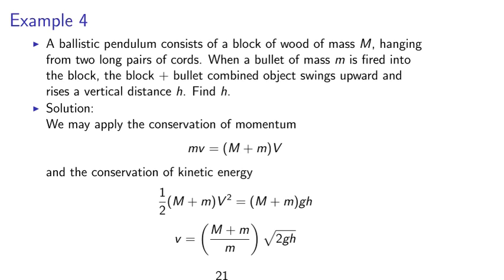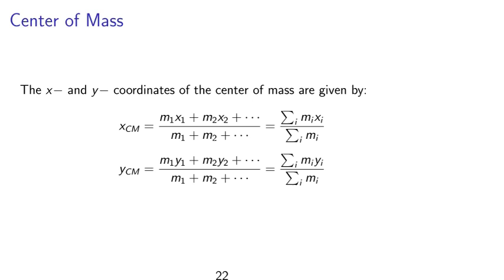So using the conservation of kinetic energy and the conservation of momentum, we can solve to find the final velocity, m plus m over m times the square root of 2gh.